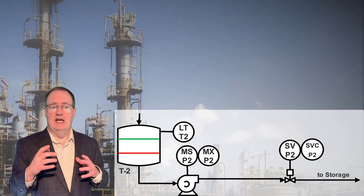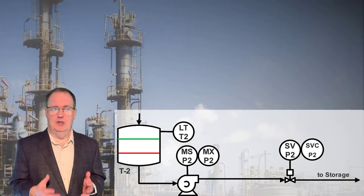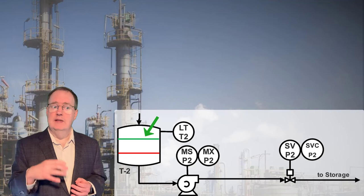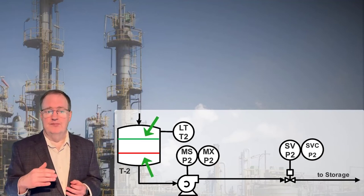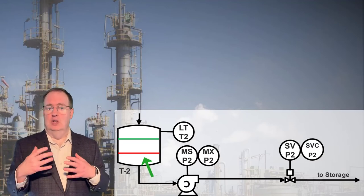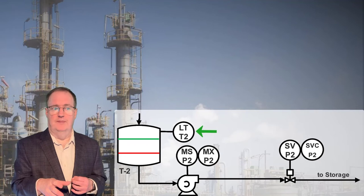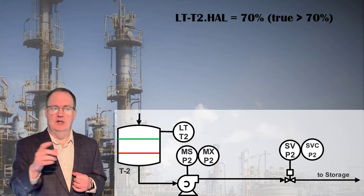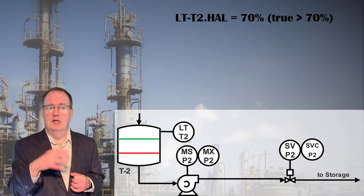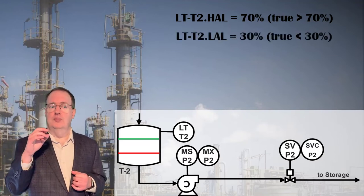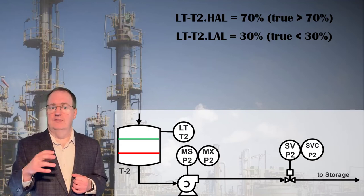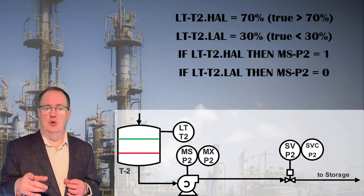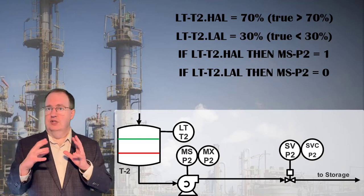The next example attaches this pump and level to a tank that needs to be periodically pumped out. The pump should start when the level is greater than 70% and stop when the level reaches 30%. We can solve this by defining a high and a low alarm for LT-T2, the level transmitter. The high alarm, written as LT-T2.HAL, will be true when the level is higher than 70% and false otherwise. Two simple discrete constraints serve to turn the pump on and off at the two trigger points.